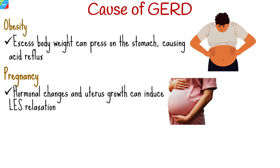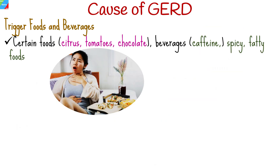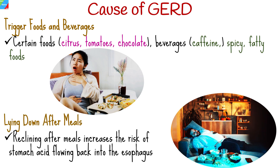Hormonal changes and uterus growth during pregnancy can induce lower esophageal sphincter relaxation, leading to acid reflux. Smoking can relax the lower esophageal sphincter, worsening GERD. Certain foods such as citrus, tomatoes, chocolate, and beverages like caffeine, and spicy fatty foods can trigger or worsen GERD symptoms.